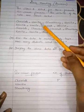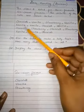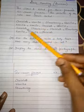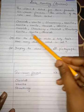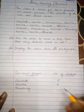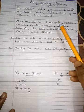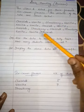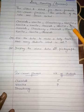For vanilla, counting: 1, 2, 3, 4, 5, 6, 7. Vanilla has 7 students. For strawberry, counting: 1, 2, 3. Strawberry has 3 students.